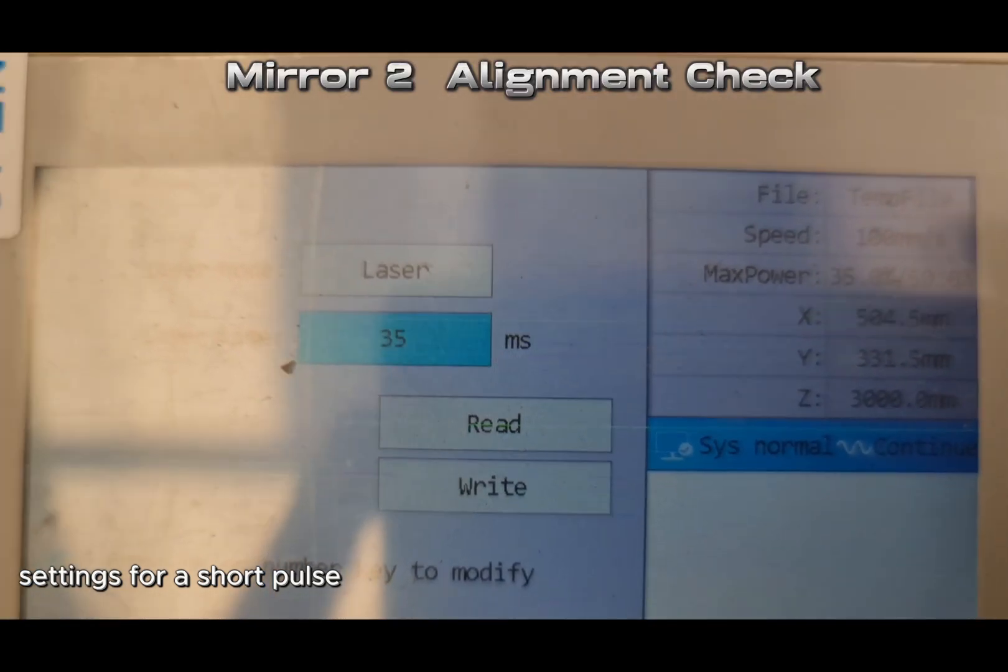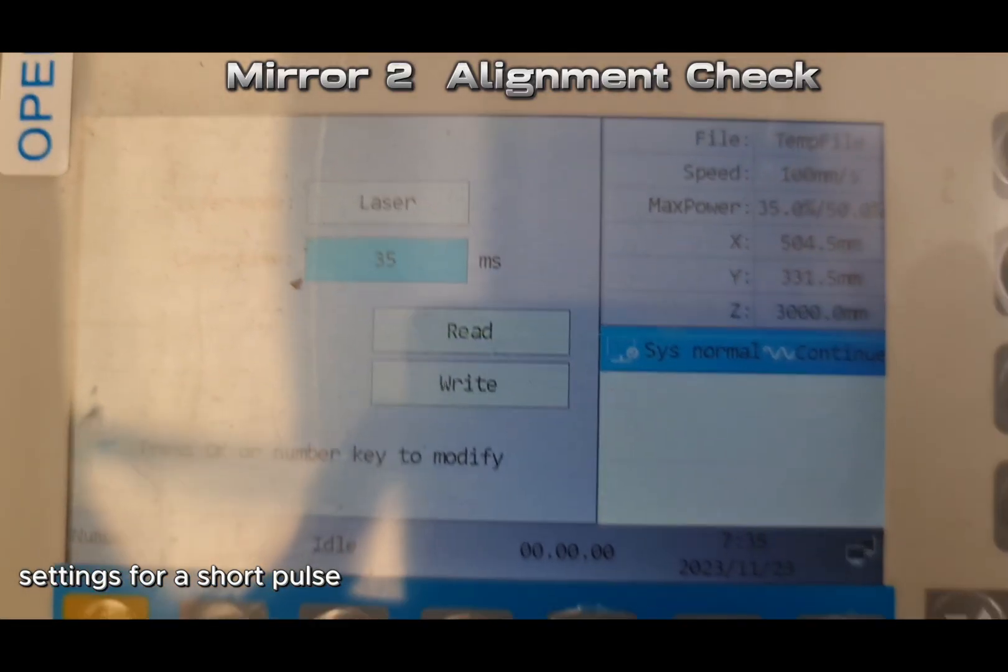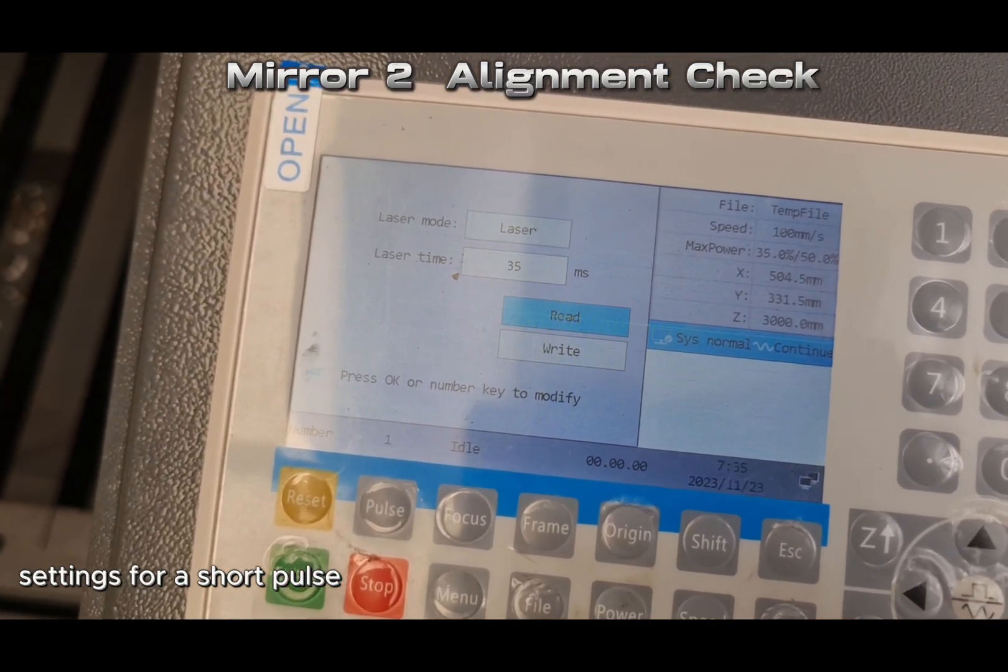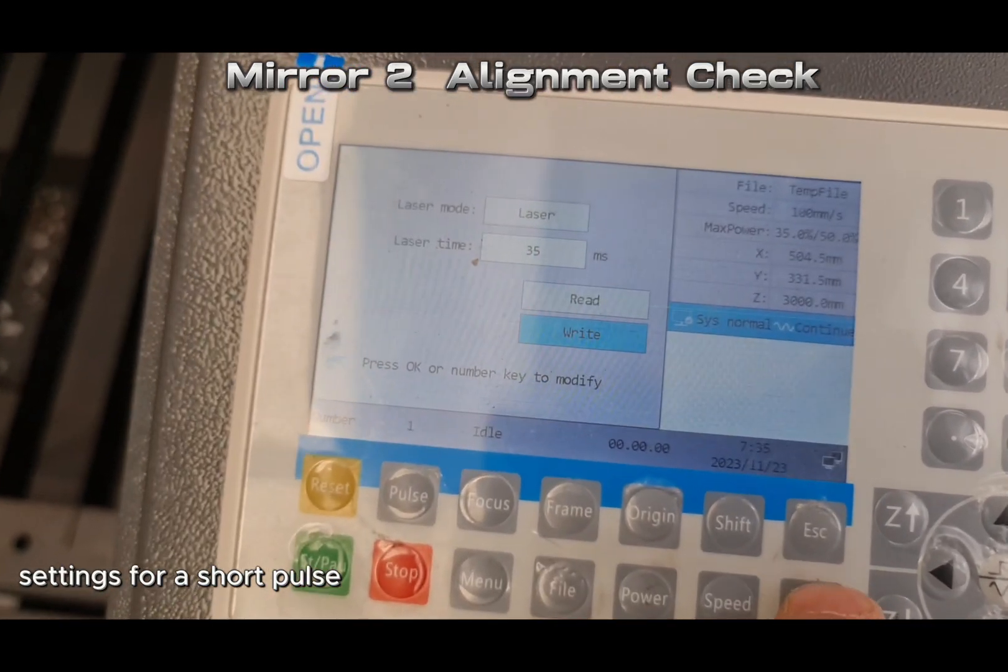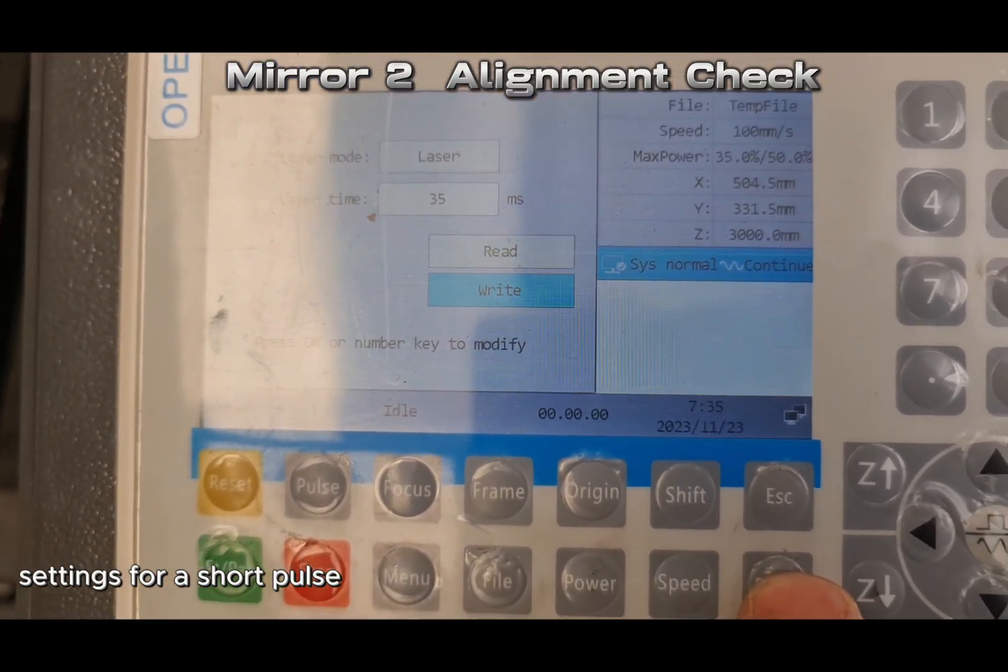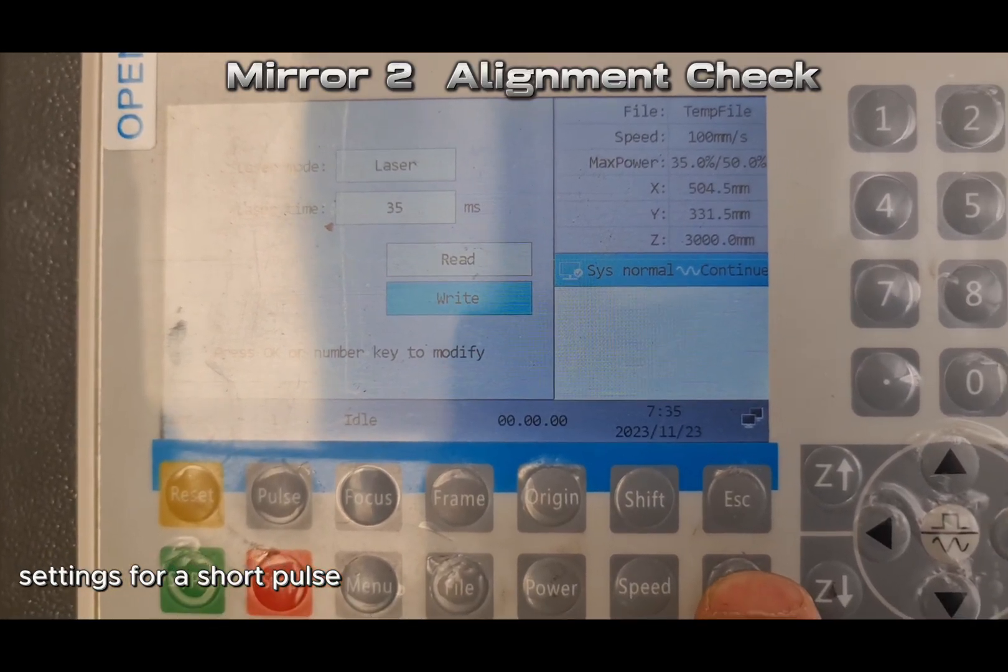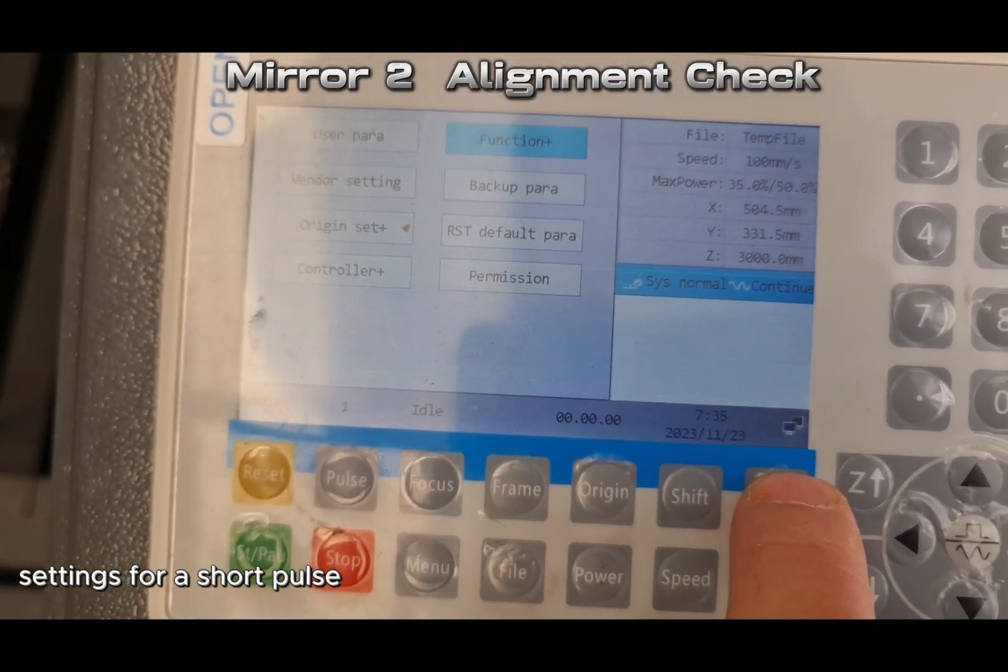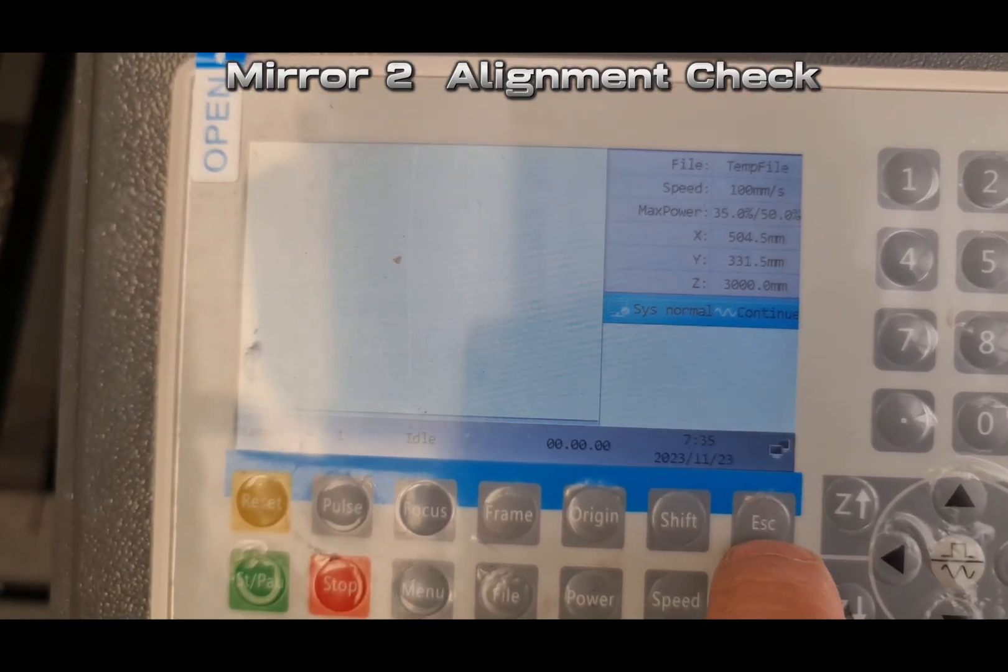Once we've done that, we'll go back out and scroll down to write and write those new settings to the controller. This will allow you to get a nice little dot on the masking tape for the alignment process. Escape out of that and back to the main screen.